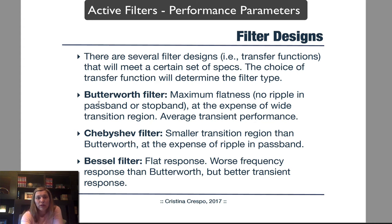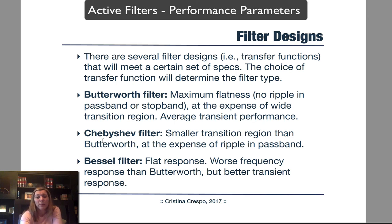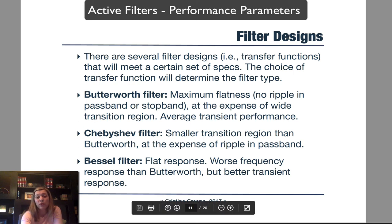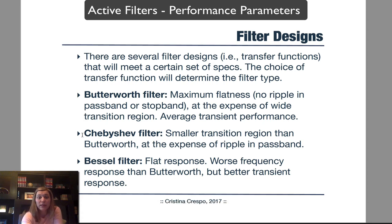Whereas the Butterworth and Chebyshev filters both optimize the amplitude part of the frequency response, the Bessel filter optimizes the time-domain response. It has better transient response — better impulse response and step response — with less overshoot and better settling time, but it has worse frequency-domain characteristics. Depending on what parameter you're trying to optimize, you might choose between these three types of filters, or a variety of other filters available as well.